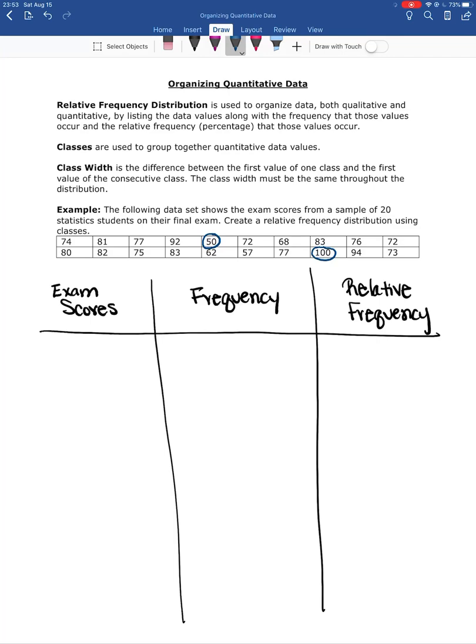Since we're talking about exam scores, the best way to do this is to go by 10s. Okay, because if you get in the next group of 10s on an exam, then you have the next letter grade. So that's a way that it makes sense.